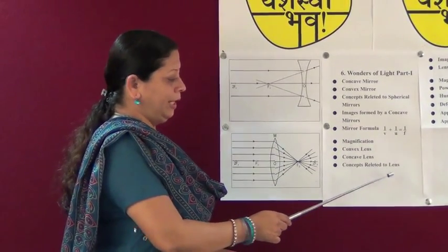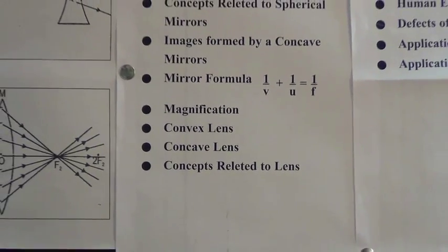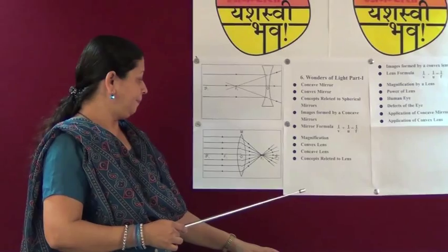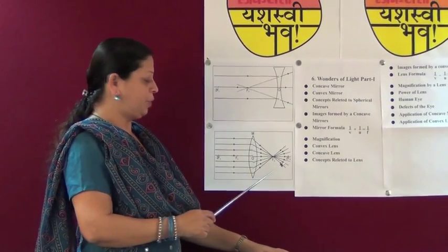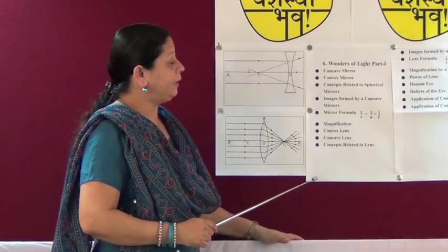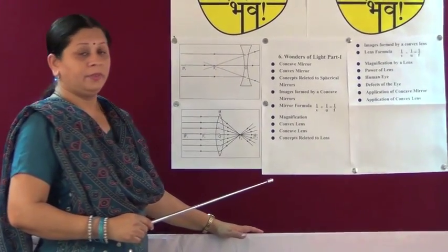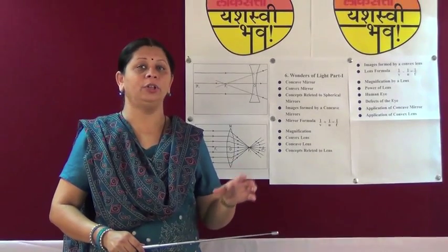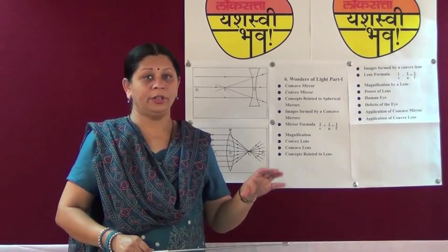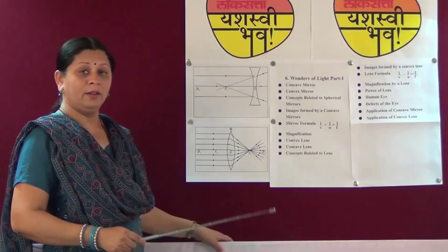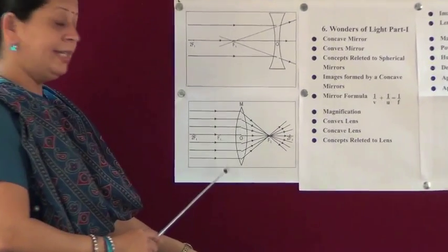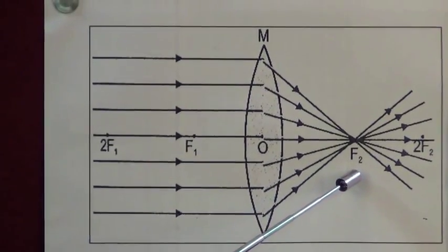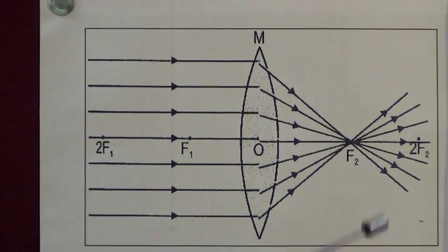Now, what are the concepts related to lenses? Center of curvature: it is the center of the imaginary sphere that forms the lens. Principal axis: it is the axis passing through the two centers of curvature. Now, images formed by a convex lens — the nature, size, and shape of the image depend on the position of the object kept in front of the convex lens. The focal length of a convex lens: rays parallel to the principal axis, incident on the convex lens, converge in one point after refraction — that is called the principal focus. There are two principal focuses for a convex lens, F1 and F2.